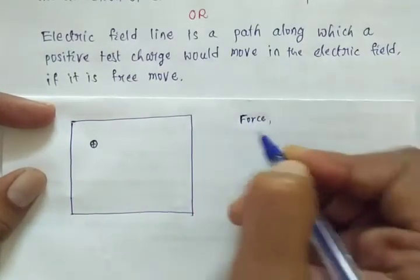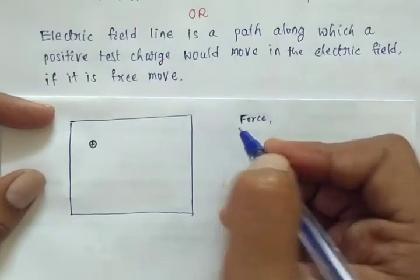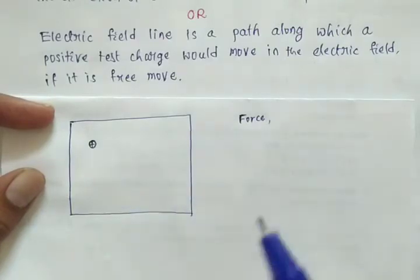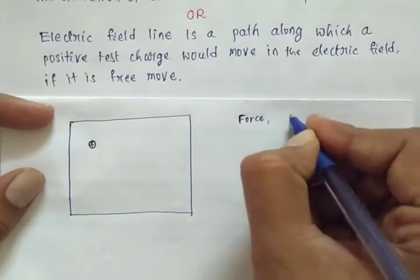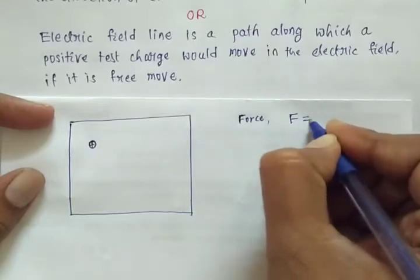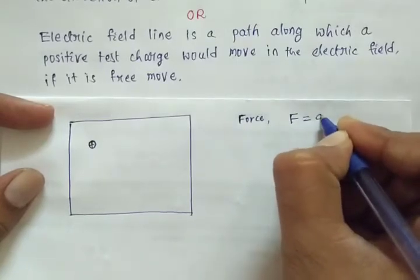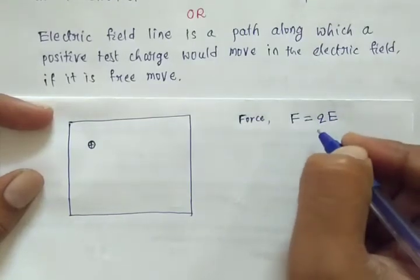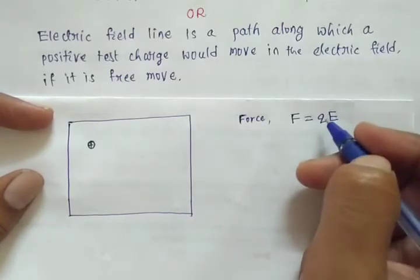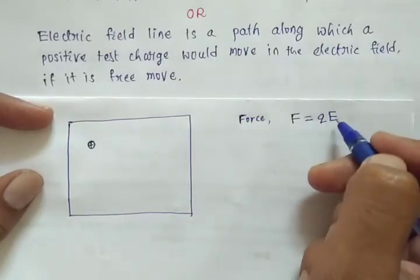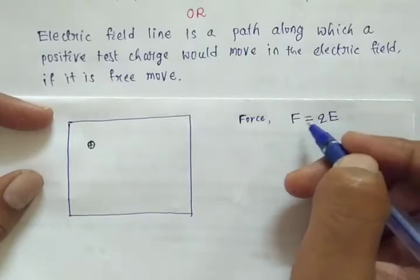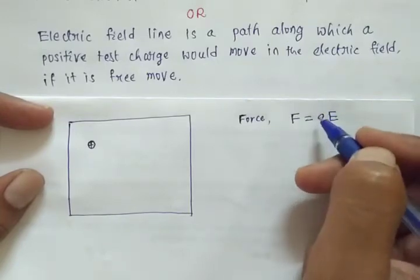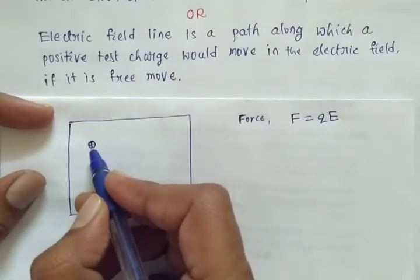A charge placed in an electric field always experiences a force. The force experienced by a charged particle in an external electric field is given by F equals Q into E, where Q is the charge and E is the electric field strength. This is always the case — a charge always experiences a force when placed in an electric field.